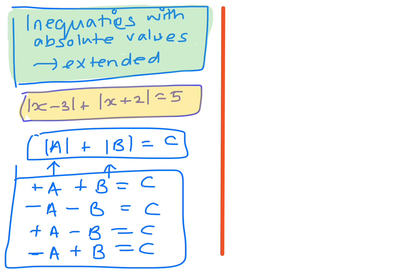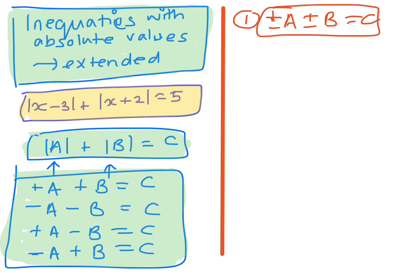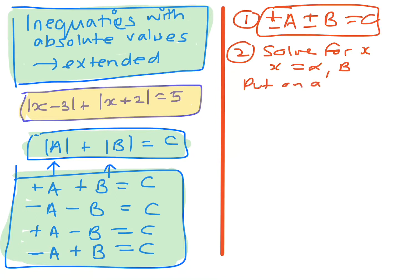The first step is to solve using these four different possibilities. Then once you've done that, you need to look for your key solutions, put them on a number line, and then test the point. So you're doing the different combinations of plus or minus a, plus or minus b equals c. Once you've solved for x, let's say you end up with x equals alpha and x equals beta.